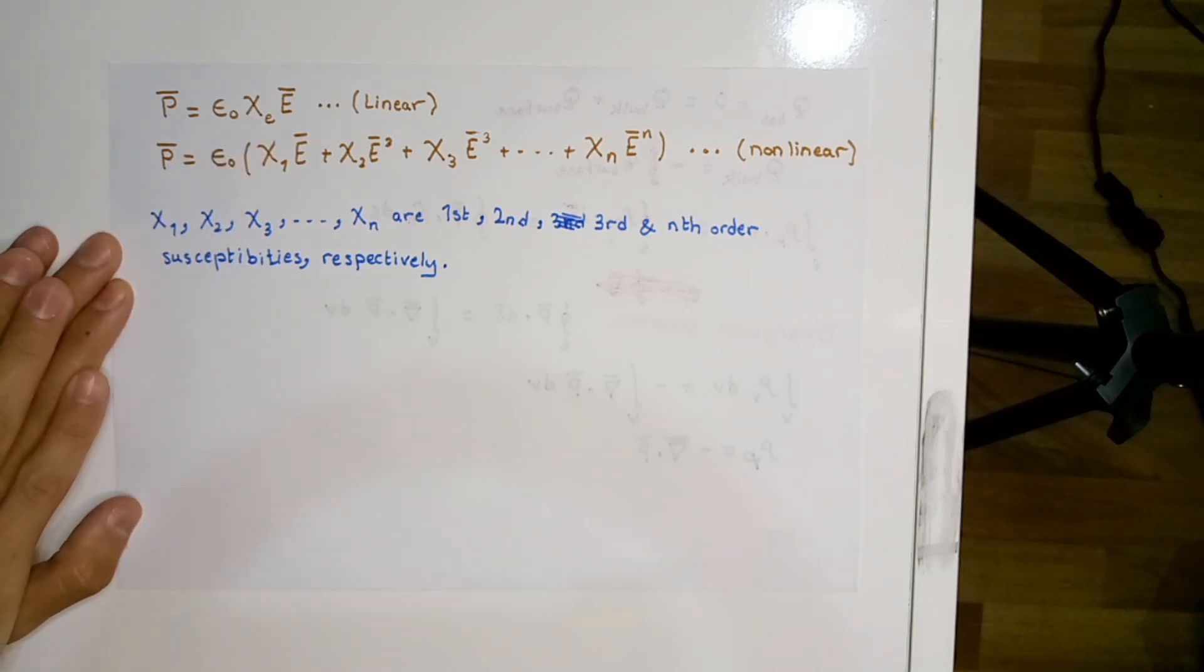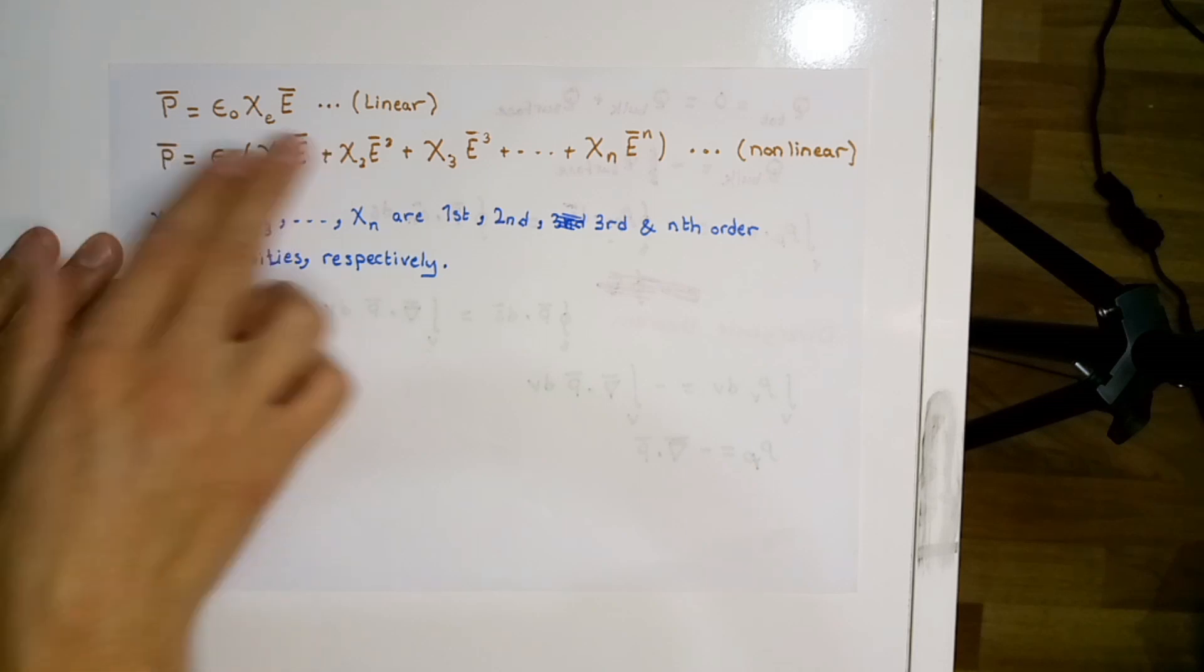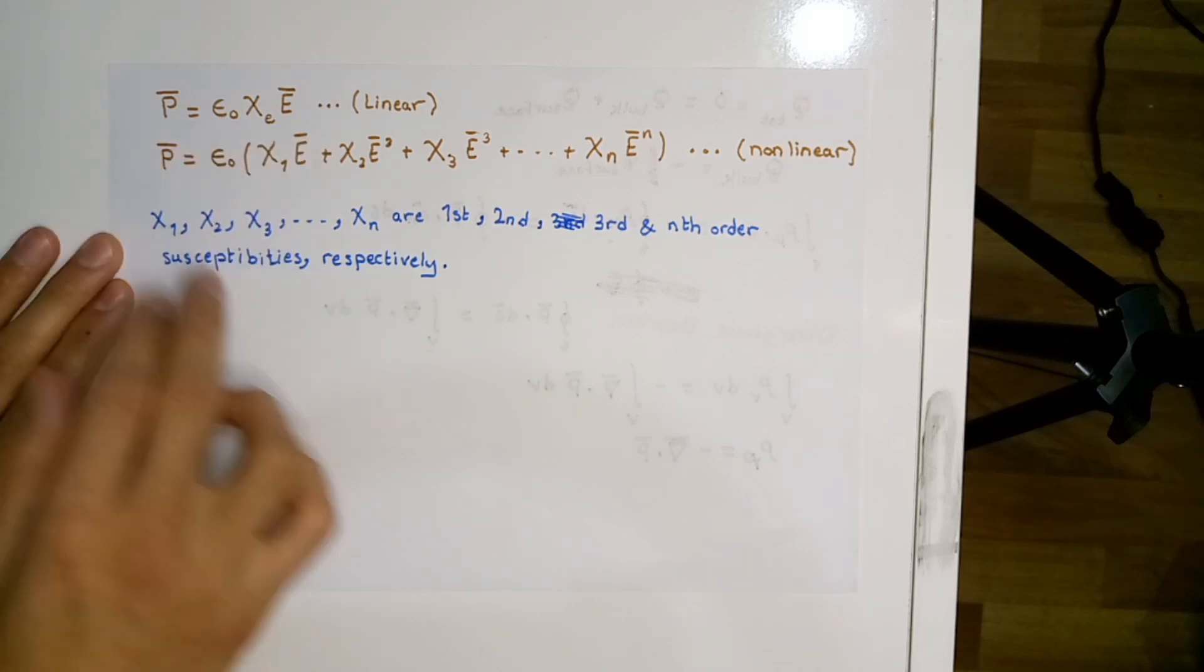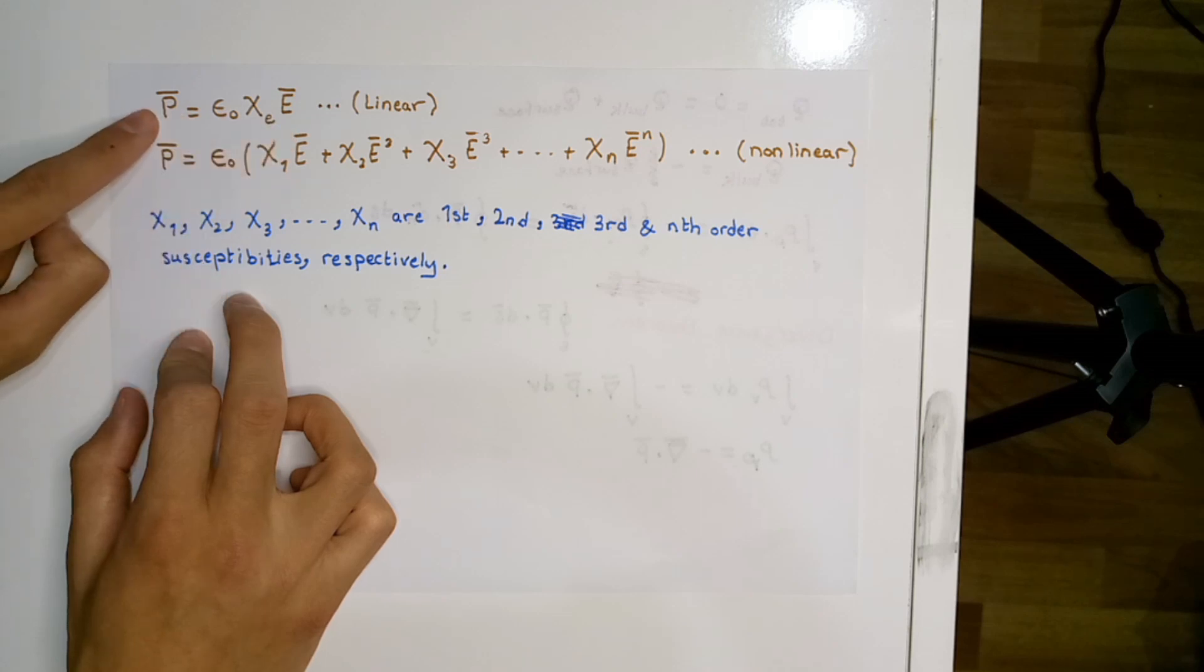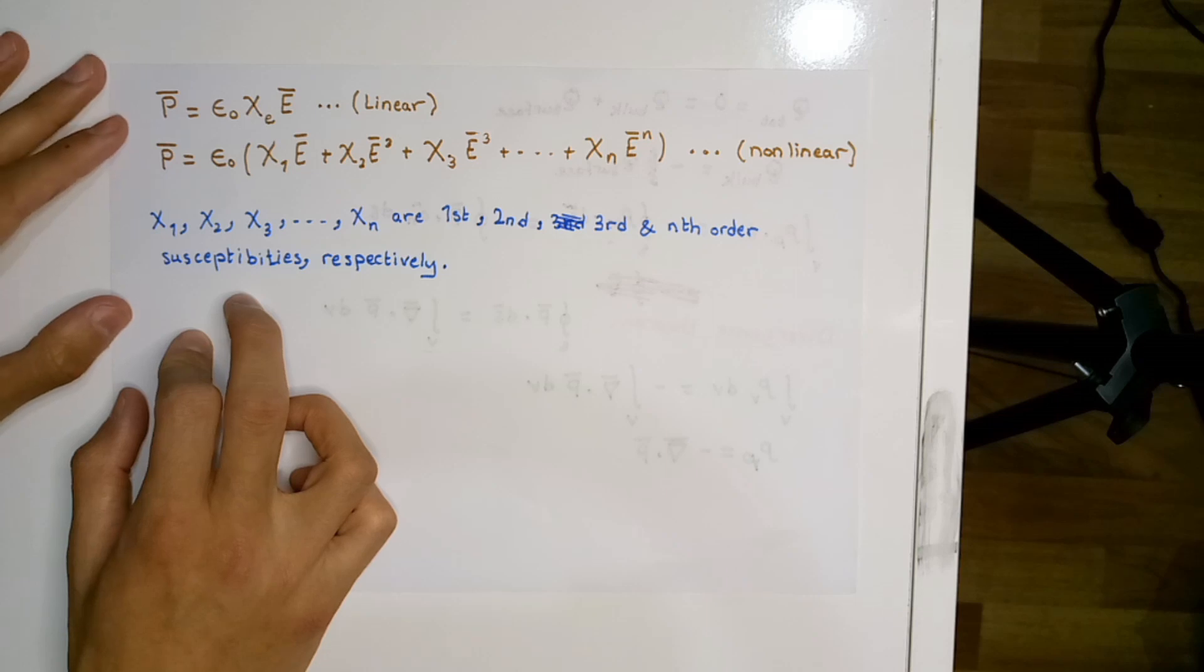Materials or dielectrics that obey this equation are called linear dielectrics. In other words, the polarization is varying linearly with the applied electric field. Otherwise, the material is non-linear.